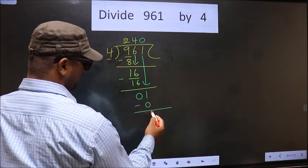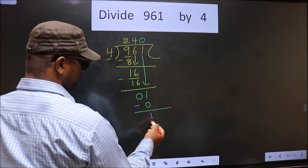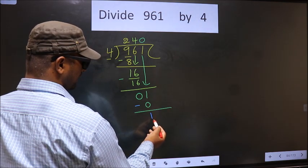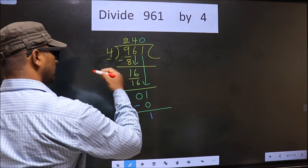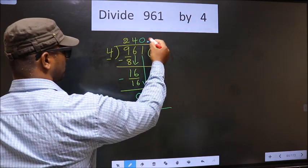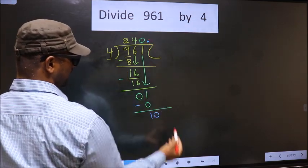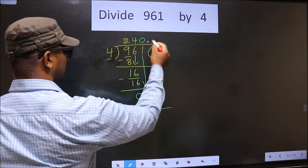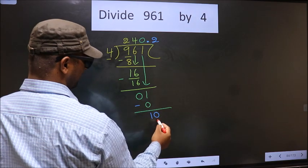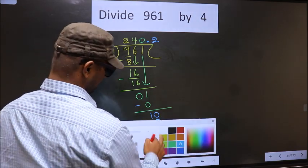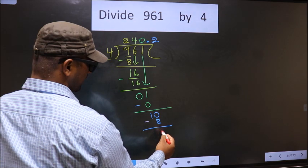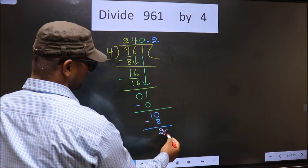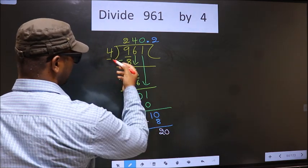Over here we did not bring any number down, and 1 is smaller than 4, so now you put a dot, take 0 here. So 10. A number close to 10 in the 4 table is 4×2=8. You subtract 10 minus 8. We already have decimal, take 0.